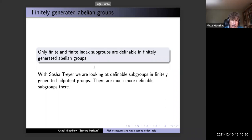So free groups are very poor in terms of first-order definable subgroups — not many subgroups are definable. Infinitely generated abelian groups have only finite-index subgroups and finite subgroups definable. In finitely generated nilpotent groups it is much more interesting — there is a sort of analog of linear algebra with homogeneous and non-homogeneous solutions, which is quite interesting.